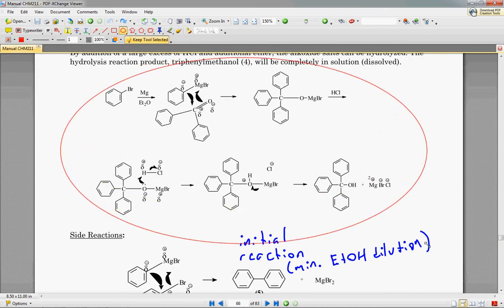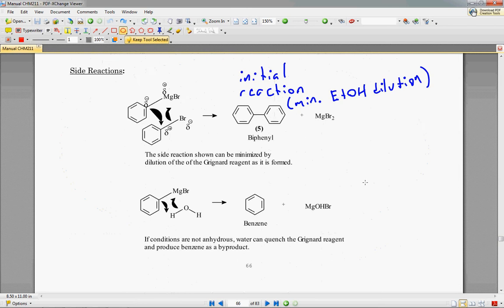So, pretty much everything I just said in terms of mechanism is drawn right here on the second page, and here is a summary of side reactions. Sorry, this is not supposed to be ETOH. That's supposed to be ether.